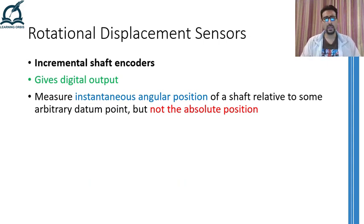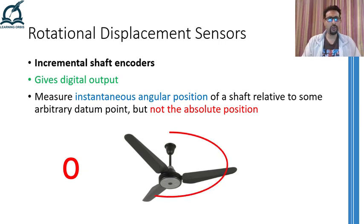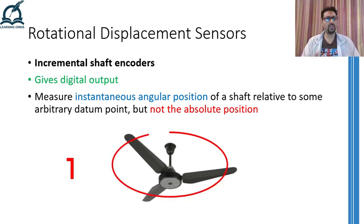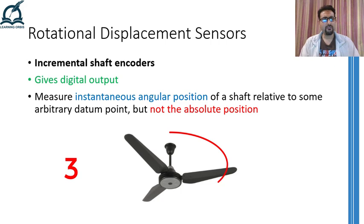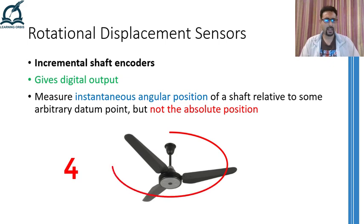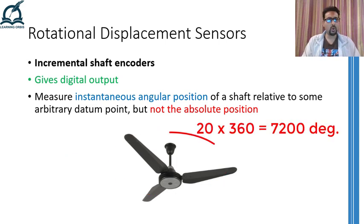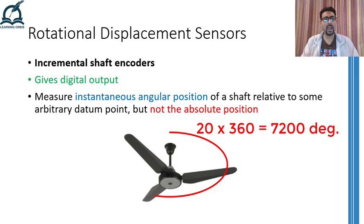The way these encoders work is quite similar to how humans record the motion of some rotating object. Suppose a fan is rotating at a very low speed and you want to record the number of rotations the fan is making in a particular time. The obvious way would be to pick one fin of the fan and keep track of that fin. Whenever that fin completes one rotation you increase the rotation count. If after 30 seconds the fin has made 20 rotations, you can figure out the total rotational displacement and additionally calculate that the fan is rotating at 40 rotations per minute, that is 40 RPM.